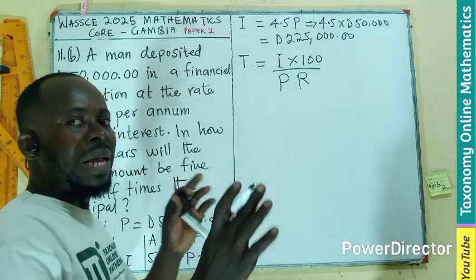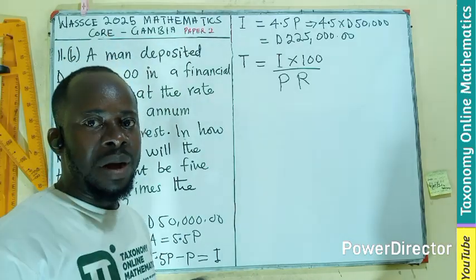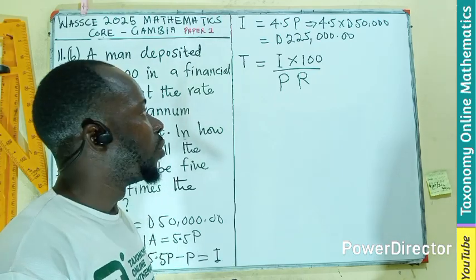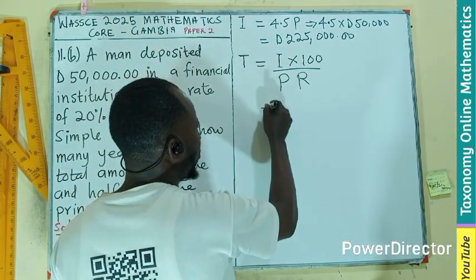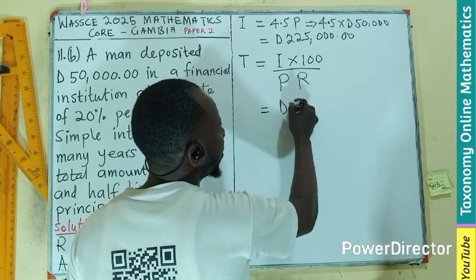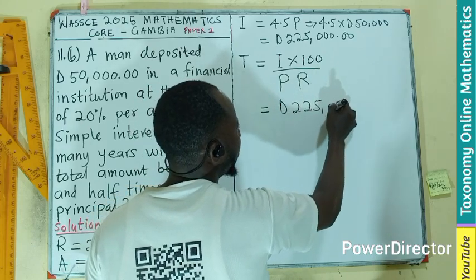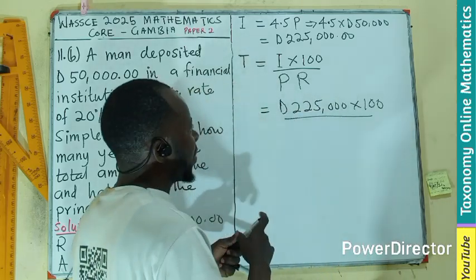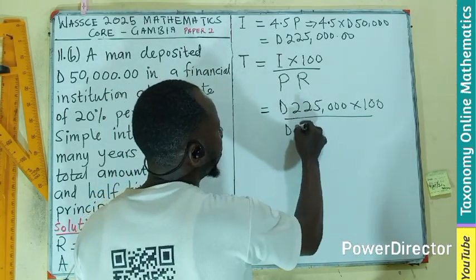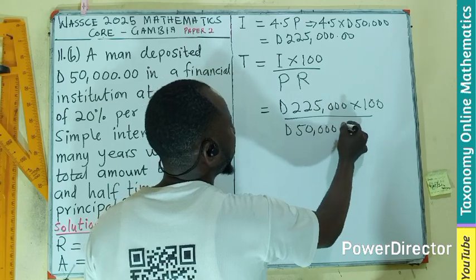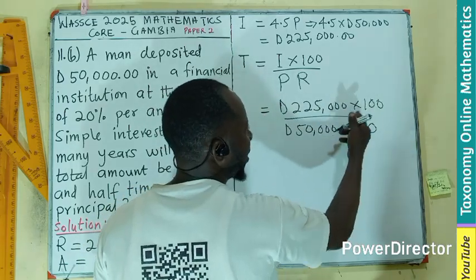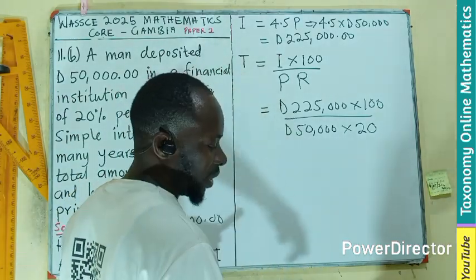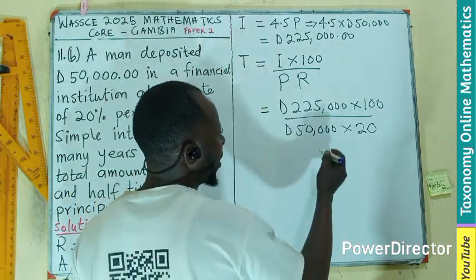This comes from our tutorial on simple interest. So Time equals 225,000 times 100, divided by Principal which is 50,000, times the Rate which is 20 percent. Let's do some cancellation to simplify.